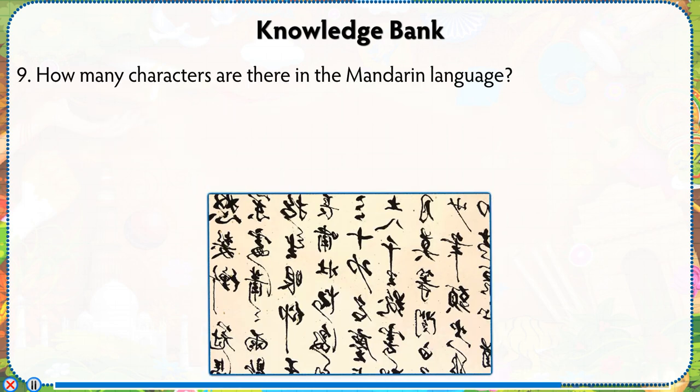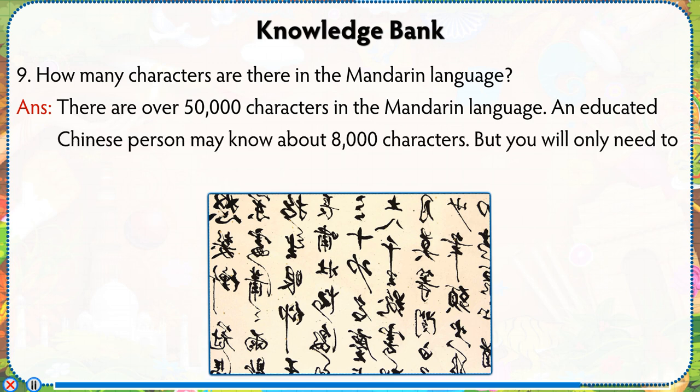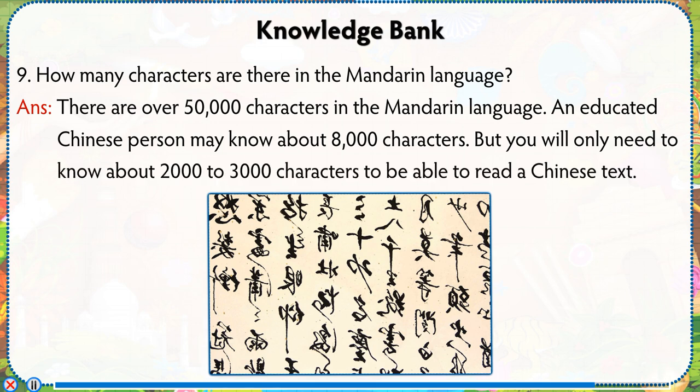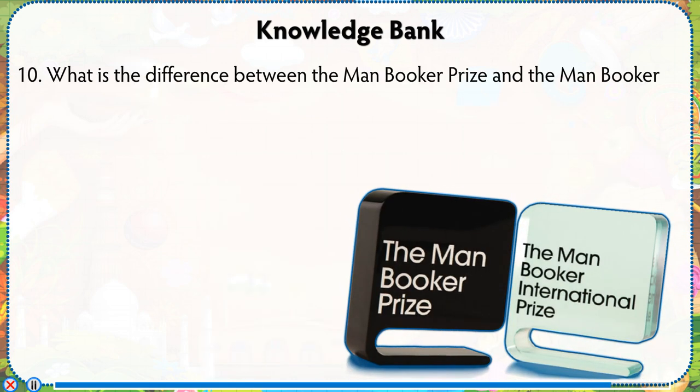How many characters are there in the Mandarin language? Answer: There are over 5,000 characters in the Mandarin language. An educated Chinese person may know about 8,000 characters, but you will only need to know about 2,000 to 3,000 characters to be able to read a Chinese text.